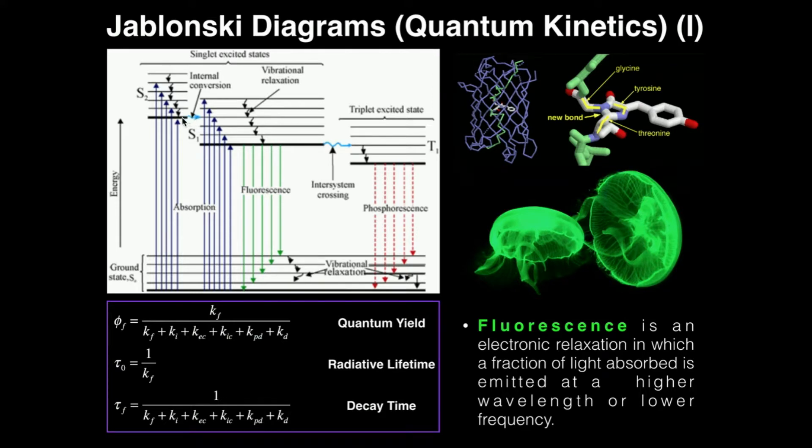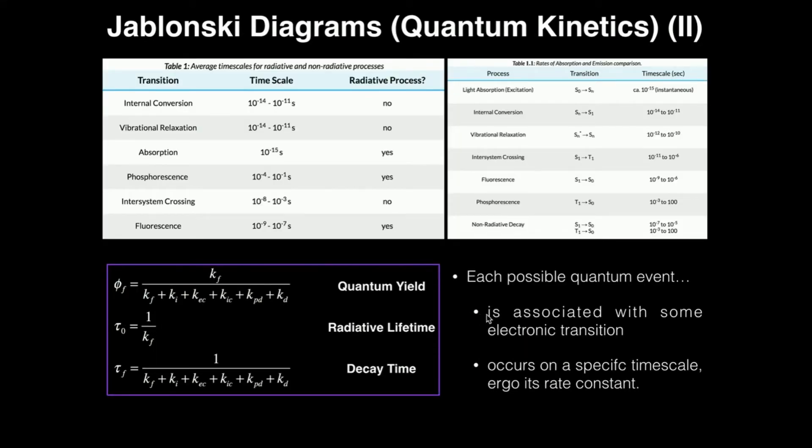They are all associated with some electronic transition. So for example, internal conversion is a conversion between the S2 state and the S1. Intersystem crossing between S1 and T1. We can even talk about fluorescence being between S1 and the ground state, typically given as S sub-zero. So each one of these processes is given by some electronic transition.